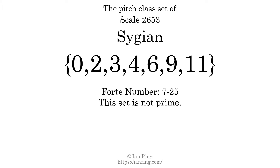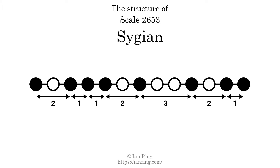The structure of a scale is a description of the interval distance between each successive tone. This scale has a structure of 2, 1, 1, 2, 3, 2, 1.